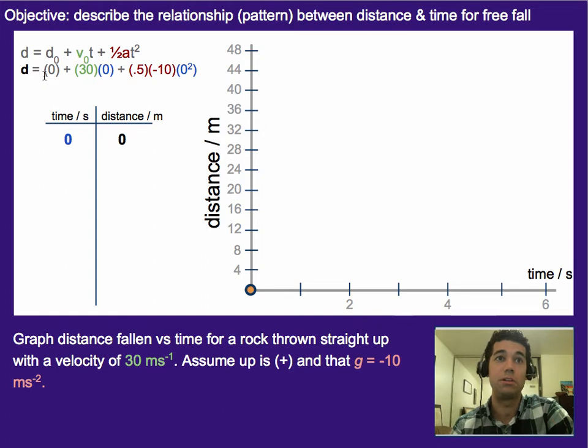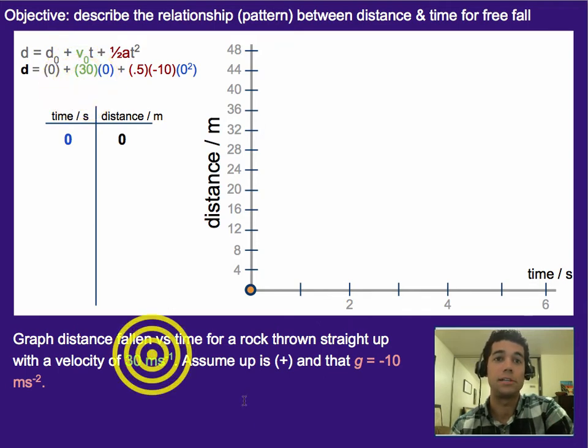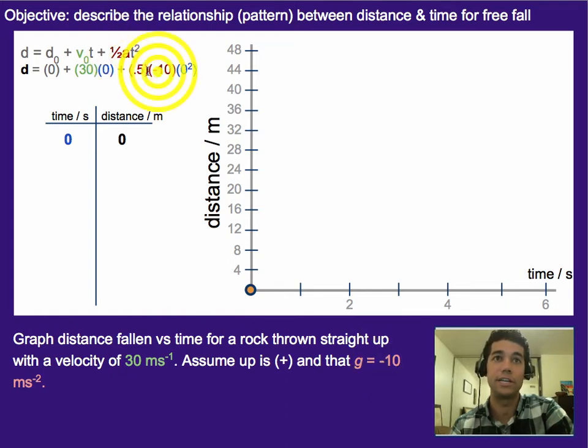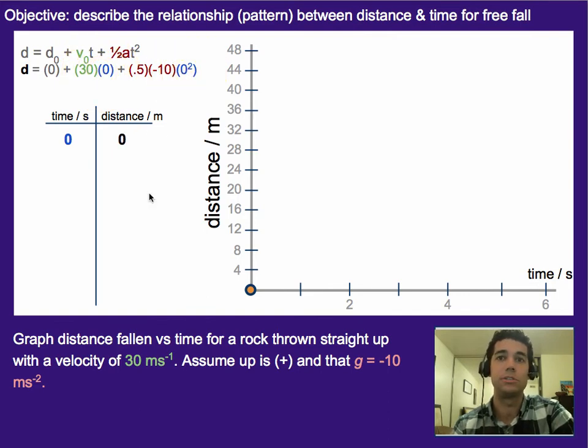Then in order to graph this, what we're going to do is we're simply just going to plug in. So it doesn't say anything about a beginning position, so I'll assume it's zero. The beginning speed is 30 and it's up, so it's positive in this case. We know that gravity is 10, so the acceleration is 10. But we still have to keep that one half in front. And then our time at time zero is what we're going to start with. We plug in into these two values, and what we get is that the total distance traveled was zero.